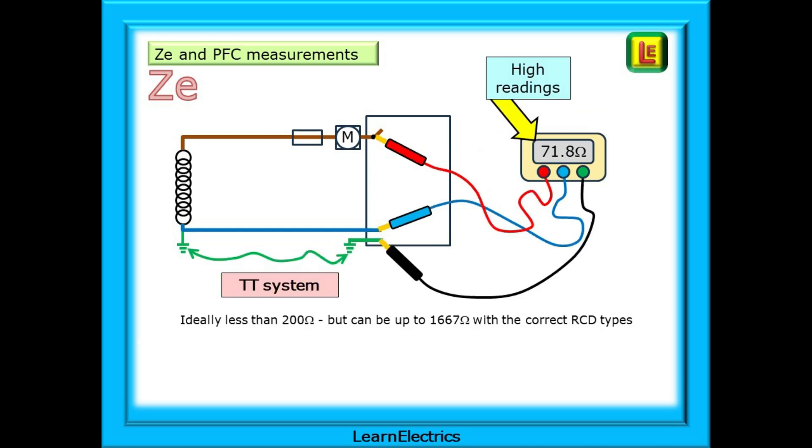For TT systems there is no copper earth connection between the installation and the supply transformer. We rely on the earth rod at each end and the conductivity of the soil to allow the fault current to flow out of the installation earth rod. What flows out is replaced by electrons flowing in at the transformer earth rod. This does mean that ZE is very much affected by the conductivity of the soil and the distance to the supply transformer. The readings shown here would have been typical for my house out in the wilds of Shropshire in the winter, but a long hot summer would see the impedance rise as the soil dried out. Ideally we are looking for readings below 200 ohms, but this can be extended to 1667 ohms if the appropriate RCDs are installed.